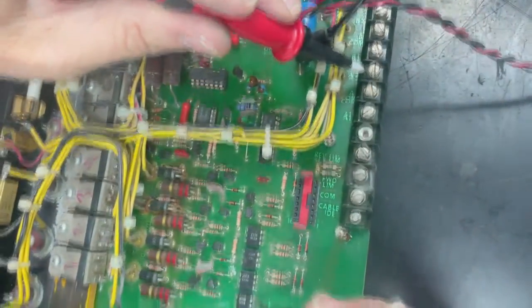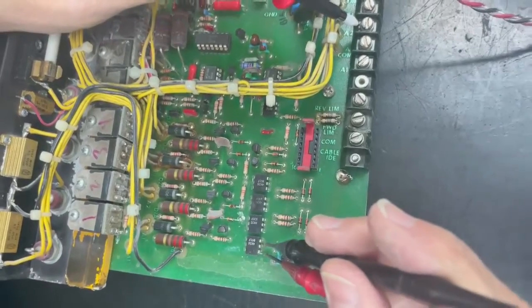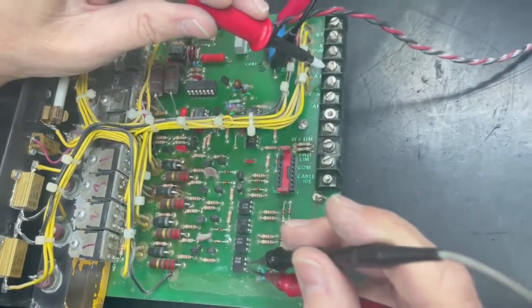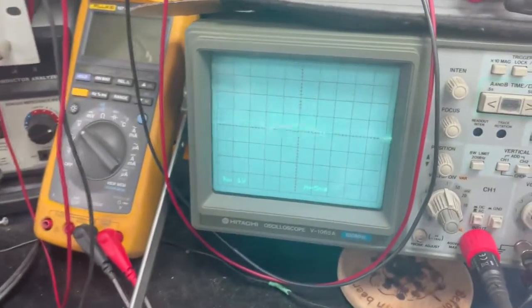Then we go over to our next channel, and we come up here, and we trigger it, and look at the scope as we are turning it on and off.